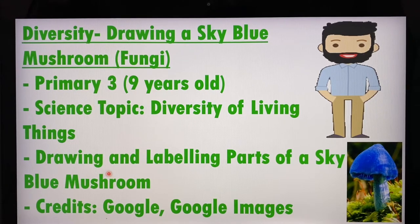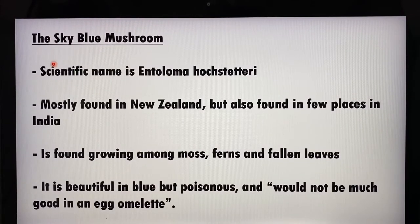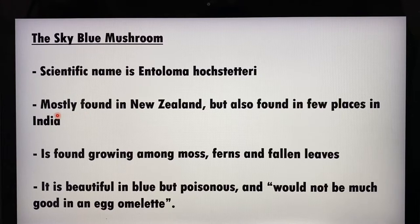I will be drawing and labeling parts of a sky blue mushroom. Credits go to Google Images for finding such beautiful pictures. The scientific name of this mushroom is Entoloma Hochstetteri — quite a mouthful. This sky blue mushroom is mostly found in New Zealand, but it can also be found in a few places in India.